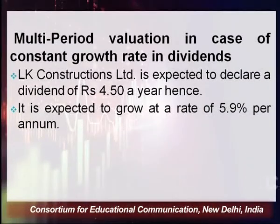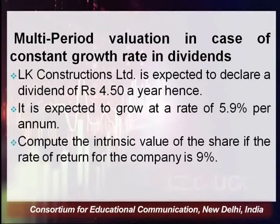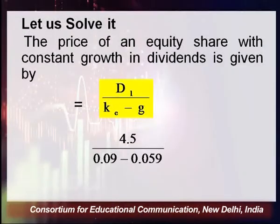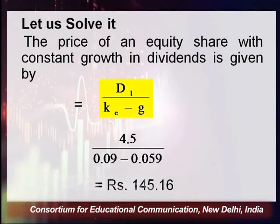For constant growth rate in dividend: LK Constructions Limited is expected to declare a dividend of rupees 4.50 a year hence, growing at a constant rate of 5.9% per annum. The required rate of return is 9%. Using the formula: P₀ = D1 ÷ (ke − g) = 4.50 ÷ (0.09 − 0.059) = 4.50 ÷ 0.031 = rupees 145.16. This is the intrinsic value when the growth rate is constant.